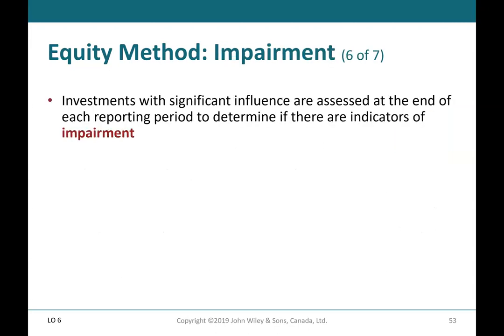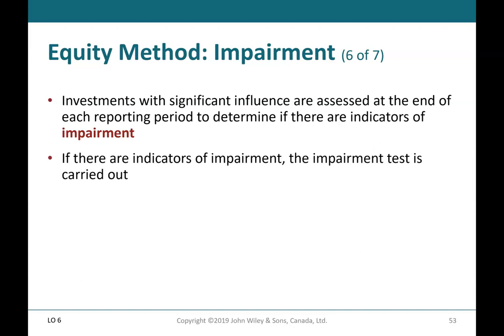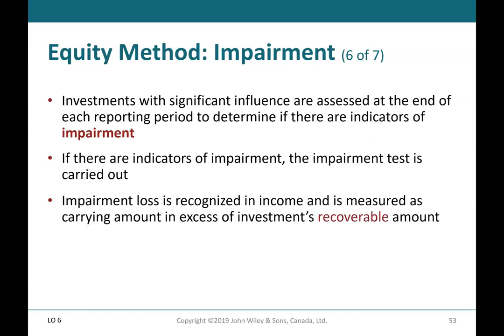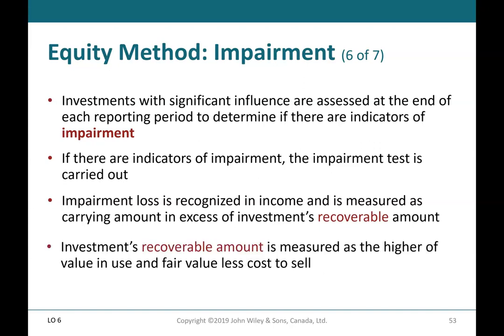Equity Method Impairment (6 of 7): investments with significant influence are assessed at the end of each reporting period for indicators of impairment. If indicators exist, an impairment test is carried out. The impairment loss is recognized in income and measured as the carrying amount in excess of the investment's recoverable amount. The recoverable amount is the higher of value in use and fair value less cost to sell. Impairment losses may be reversed.